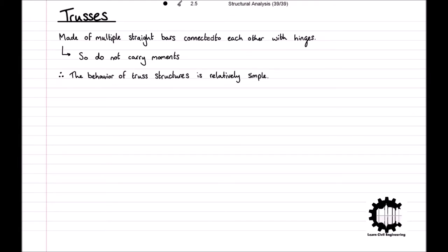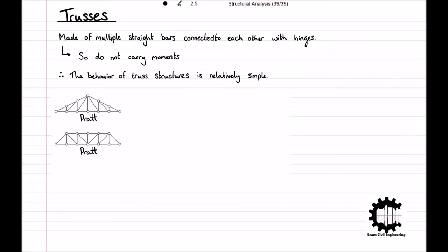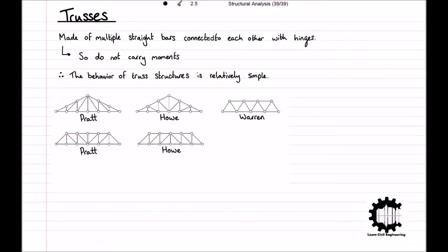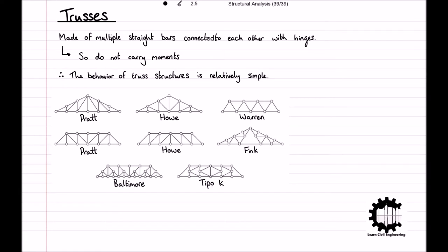In this video we will be focusing on planar truss structures, however the majority of the ideas we cover can be adjusted for three-dimensional truss structures. We will start off by quickly introducing some traditional planar truss designs. These include the Pratt, Howe, Warren, Fink, Baltimore, and Typeok trusses. Although it's not important to have all of these memorized, it is a good idea to be aware of them.